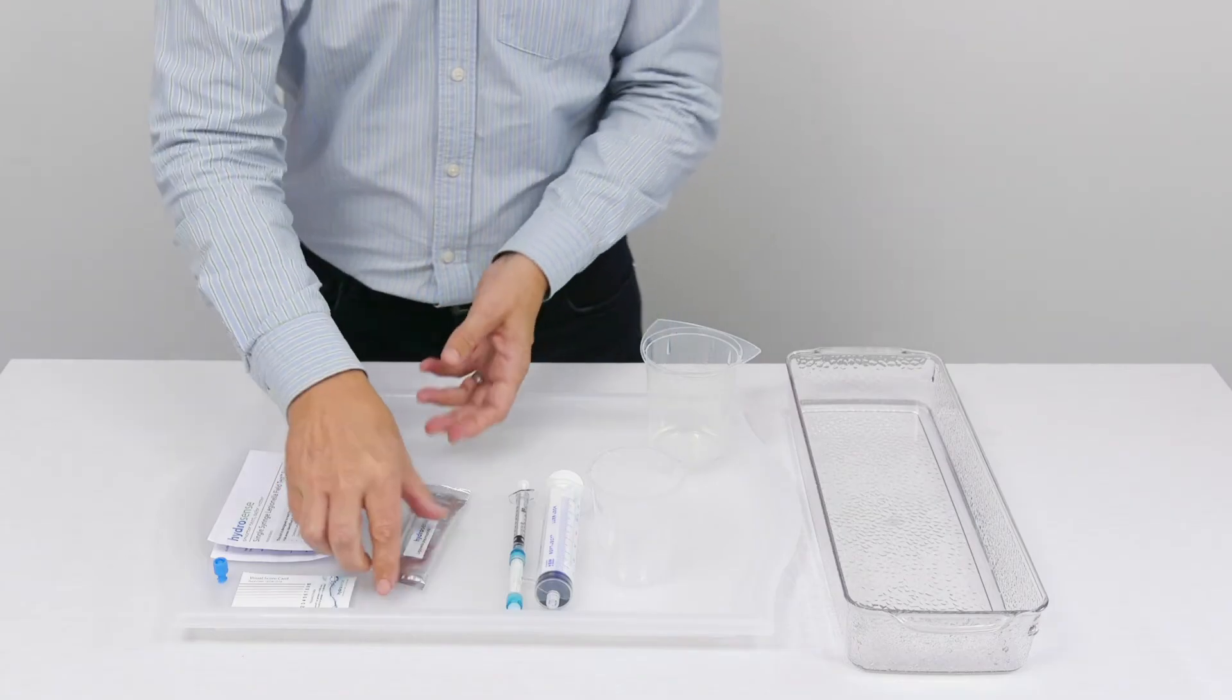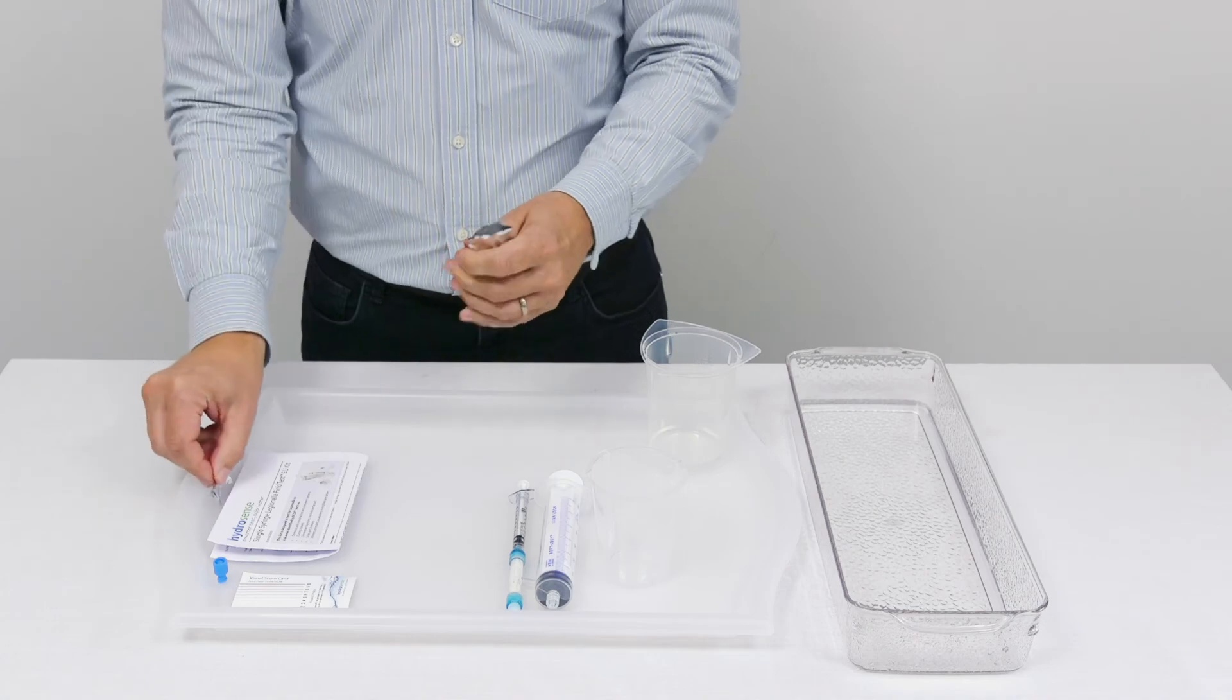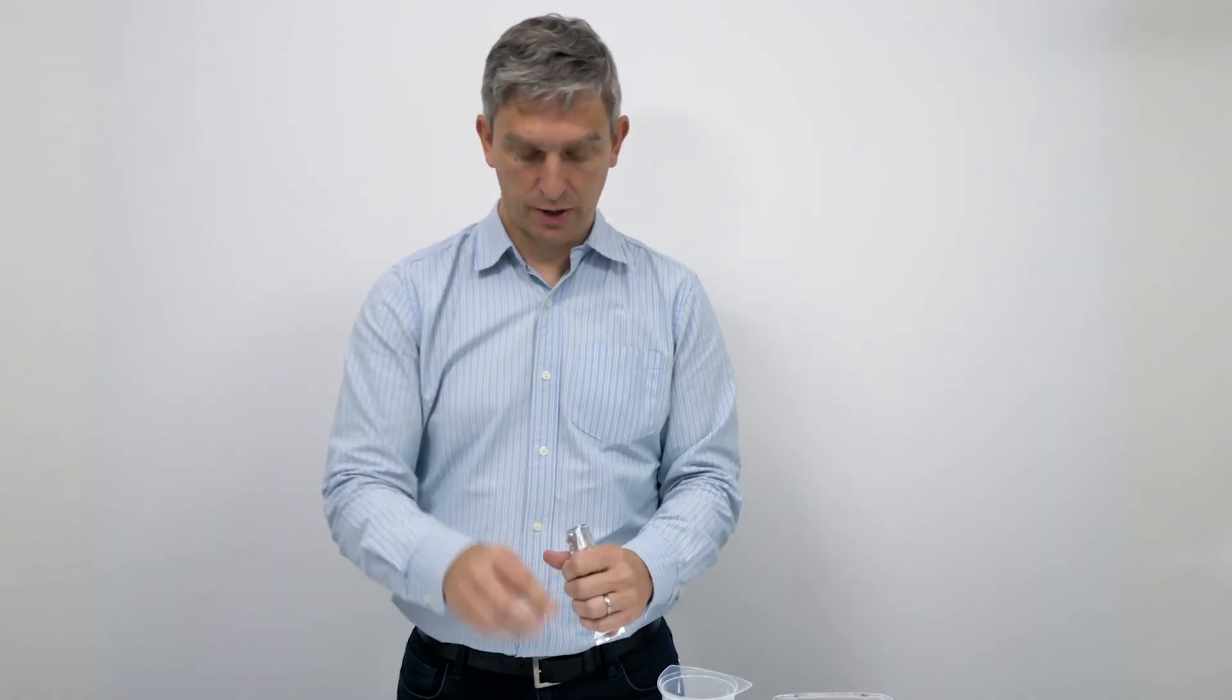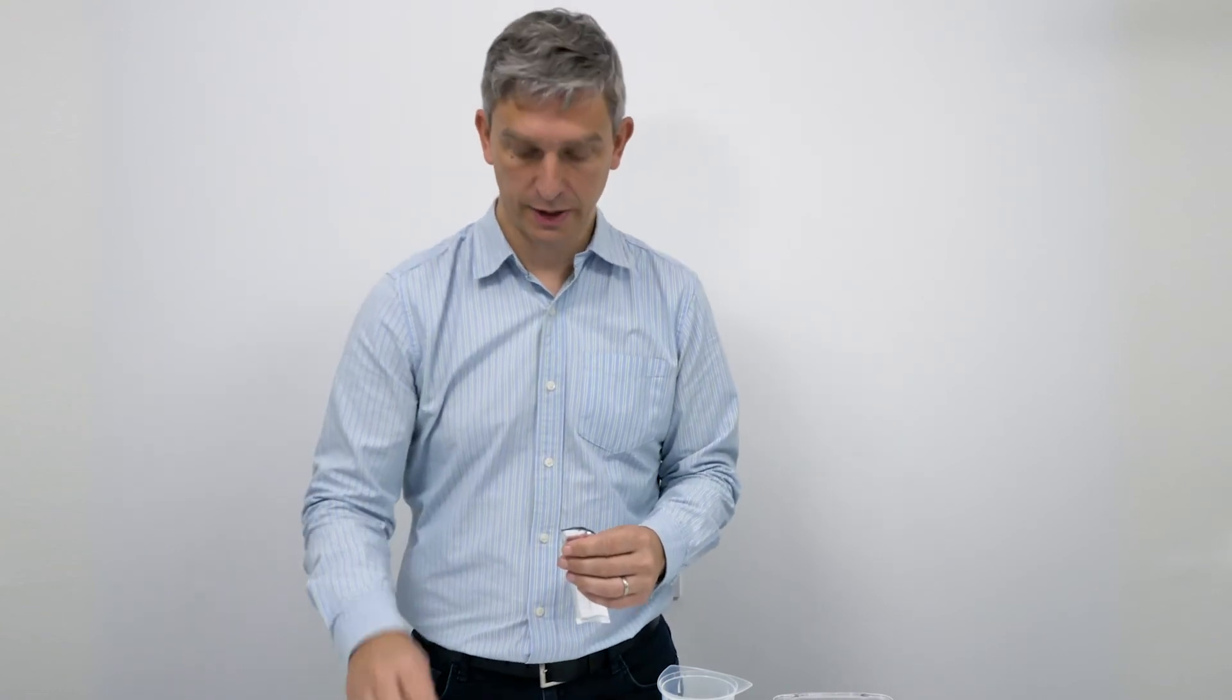Now we've collected our 0.1 mil sample, we can then take the test from its foil pouch. We do this just prior to running the test. The test is sensitive to moisture and it's recommended that you only remove it just prior to running the test.